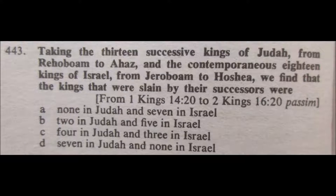Question 443: Taking the 13 successive kings of Judah from Rehoboam to Ahaz, and the contemporaneous 18 kings of Israel from Jeroboam to Hosea, we find that the kings slain by their successors were: A. None in Judah and 7 in Israel, B. Two in Judah and 5 in Israel, C. Four in Judah and 3 in Israel, or D. Seven in Judah and none in Israel. I'm eliminating A and D, so I'll go with B — 2 in Judah and 5 in Israel.